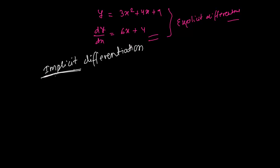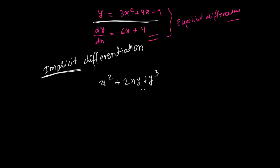Now we are going to talk about something different, called implicit differentiation. But before learning implicit differentiation, you should understand the concept of an implicit function. Unlike an explicit function, an implicit function has both x and y mixed together — for example, x² + 2xy + y³ = 0. In this equation, both x and y are present, and you may or may not be able to solve for y explicitly.